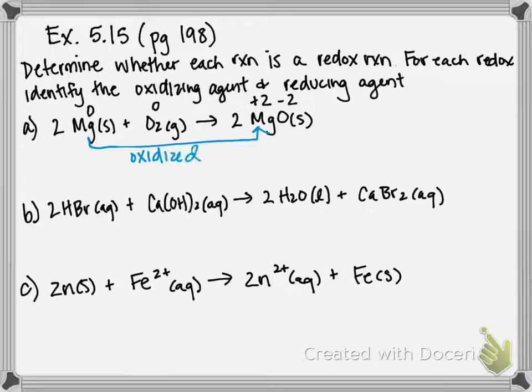So we do have a redox reaction occurring, and we always have to have a reduction with our oxidation. So if we look at oxygen, it's going from zero to negative two, so it's becoming more negative. Therefore, it is reduced.